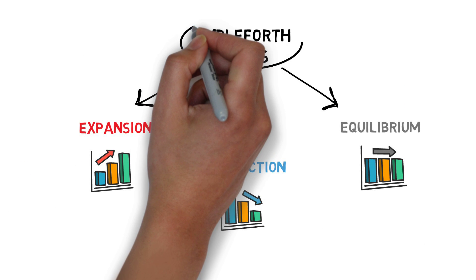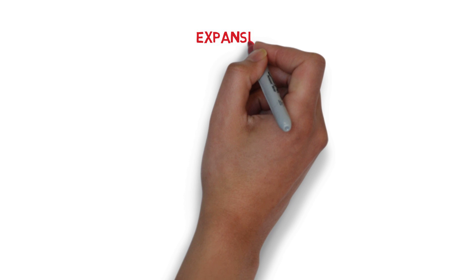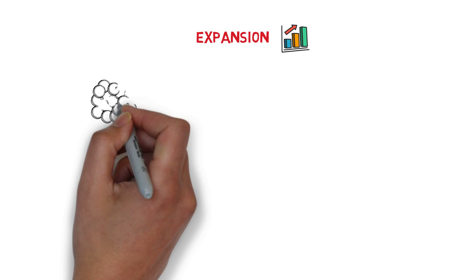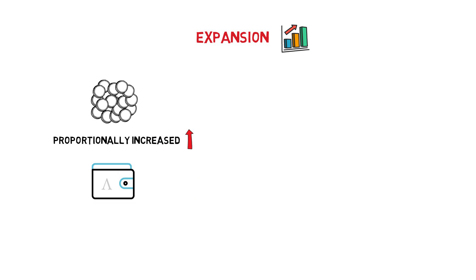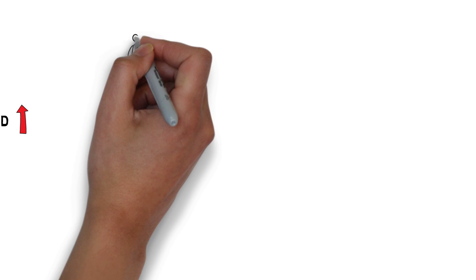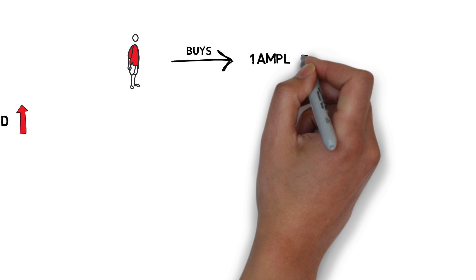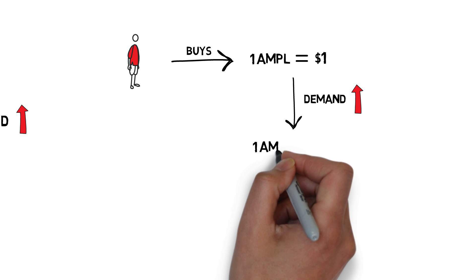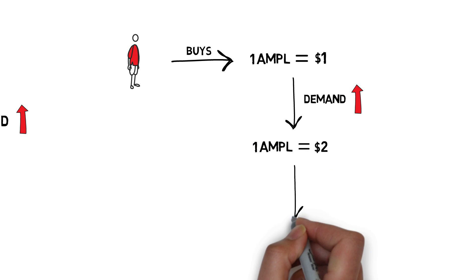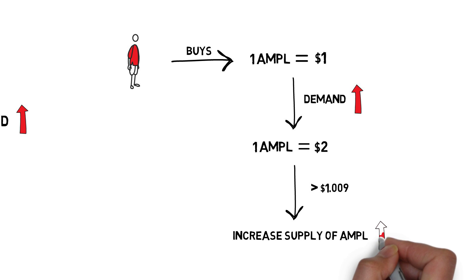Now let's get back to the Ampleforth states. Expansion: In this state, the supply of Ample tokens is proportionally increased across all wallets holding Ample tokens. Let's go to a quick example. Imagine Alice buys one Ample for one dollar. As demand for Ample suddenly increases, one Ample is now worth two dollars, which is above our target price of $1.009. In this case, the Ampleforth protocol will seek a price-supply equilibrium by increasing the supply of Ample so Alice ends up with two Ample each worth one dollar.